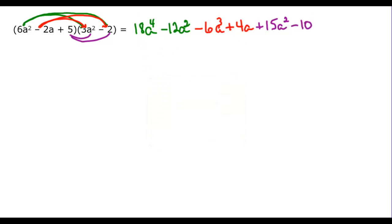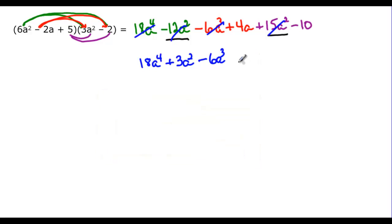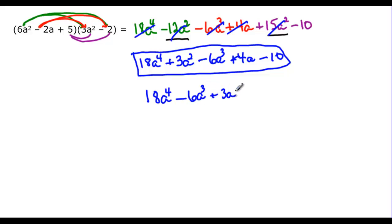Now combine like terms. We have a minus 12a squared and a plus 15a squared, which gives plus 3a squared. Everything else has no like terms. Rewriting: 18a to the fourth minus 6a cubed plus 3a squared plus 4a minus 10. If you look in the back of the book, they'd put it in descending order: 18a to the fourth, minus 6a cubed, plus 3a squared, plus 4a, minus 10.